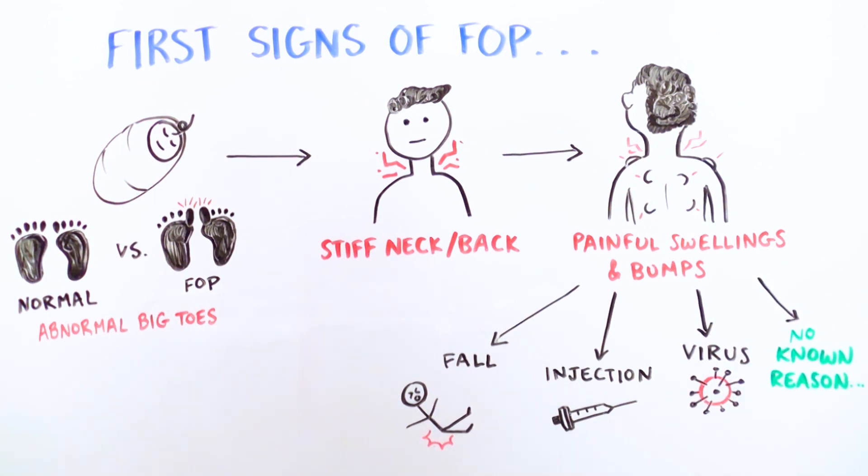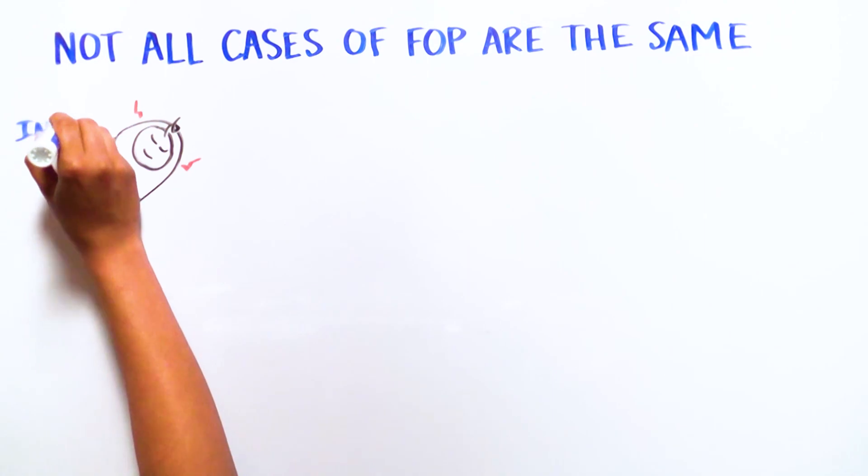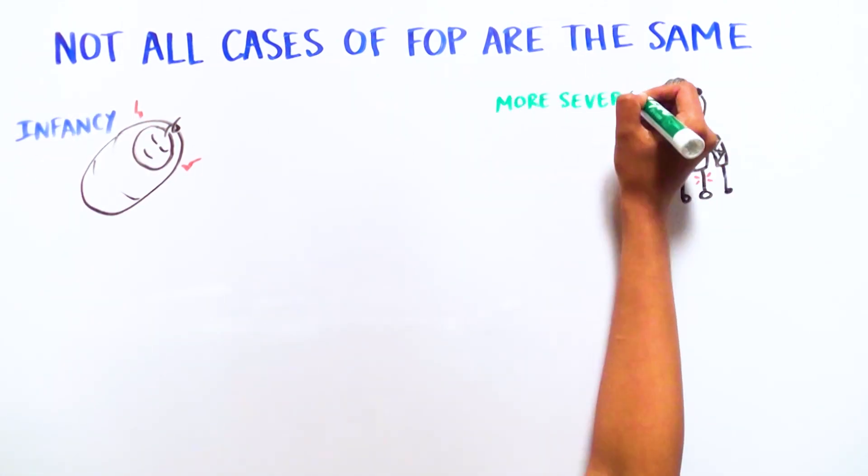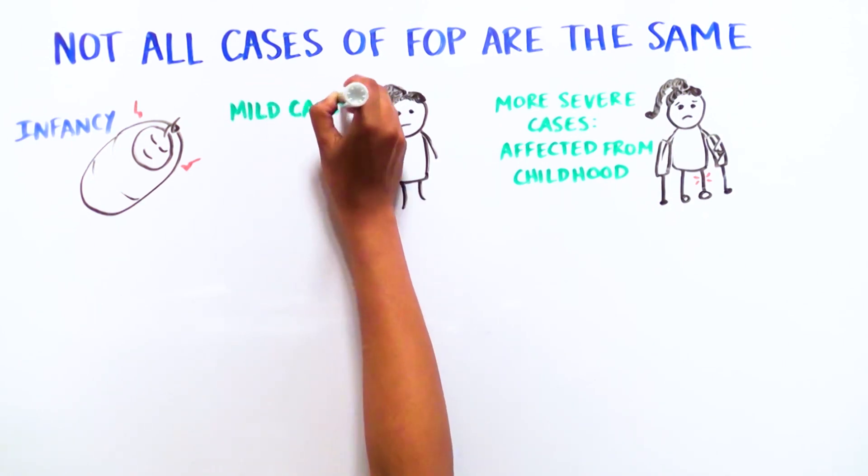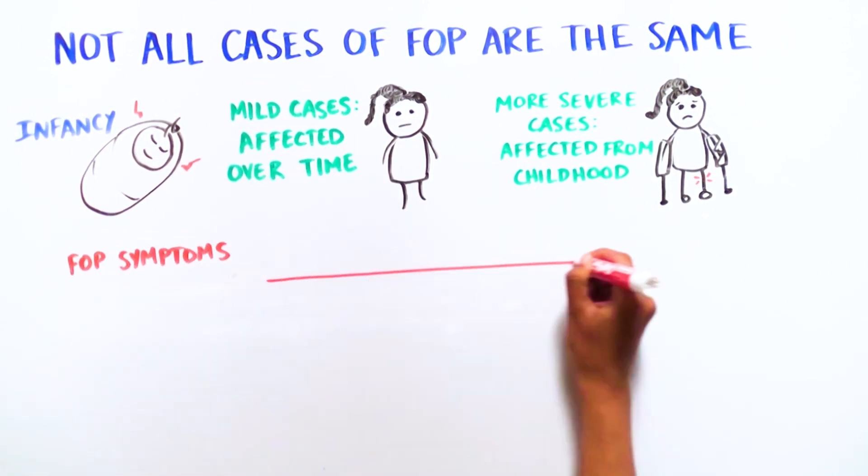Not all cases of FOP are the same. Some people, unfortunately, are affected right away. Others don't develop symptoms for years, or their symptoms are relatively mild, and they don't develop a lot of heterotopic bone.